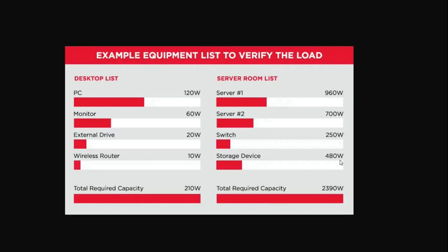On the left side we have a desktop list for the PC. This is only for the CPU unit — the central processing unit — not attached to a monitor or any external devices, just the CPU. We need 120 watts for that. For a PC it's 120 watts, for a monitor you need 60 watts, and for an external drive — whether it's an external hard drive or any device that plugs into your computer with a power adapter — you need to connect it to the APC unit.